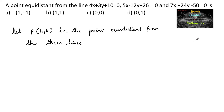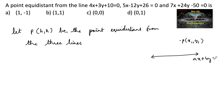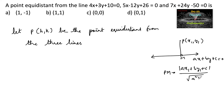Since we know that the perpendicular distance from a point (x₁, y₁) to the line ax + by + c = 0 is given by: PM = |ax₁ + by₁ + c| / √(a² + b²).